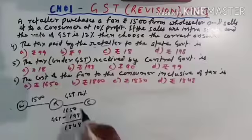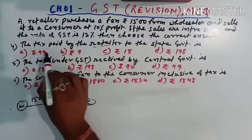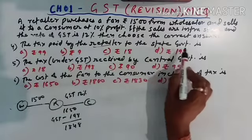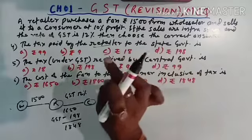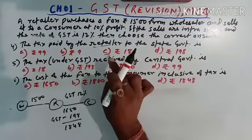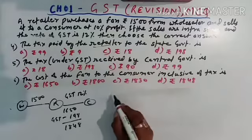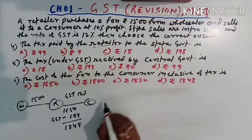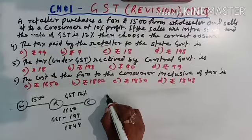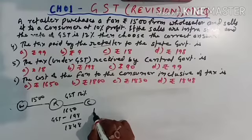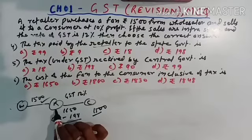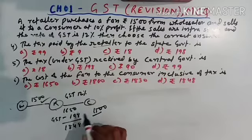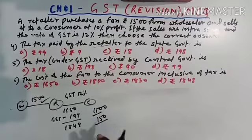Now, the next question, Q4, the tax paid by retailer to the state government, that means how much tax paid by only retailer to the state government. Now you can see that how much amount is increased by retailer, so retailer increased rupees, how much, it's only 150, because 1500 was the original cost, and he is selling it at 1650, so 150 is the amount increased by retailer, so now you will find the tax on this amount.